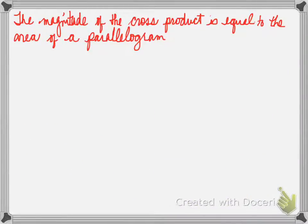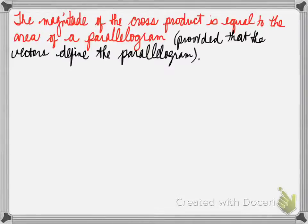Next question. Before we look at the next question, something we have to note. The magnitude of the cross product is equal to the area of a parallelogram, provided that the vectors define the parallelogram. If we remember in a parallelogram, if we take the diagonal of a parallelogram, that is equal to a triangle. So think of a parallelogram as two of the same triangles put against each other along one side.